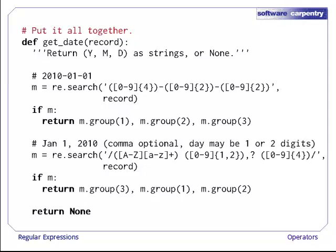Otherwise, we test the record to see if we can find the name of a month, one or two digits for the day, and then four digits for the year within slashes. If so, we return those permuting the order so that it is year, month, day. And if neither pattern matched, then we return None to signal that we can't do anything.